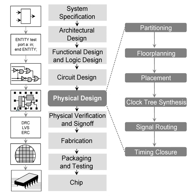There are two types of routing in the physical design process: global routing and detailed routing. Global routing allocates routing resources that are used for connections and does track assignment for a particular net. Detailed routing does the actual connections. Different constraints that are to be taken care of during routing are DRC, wire length, timing, etc.